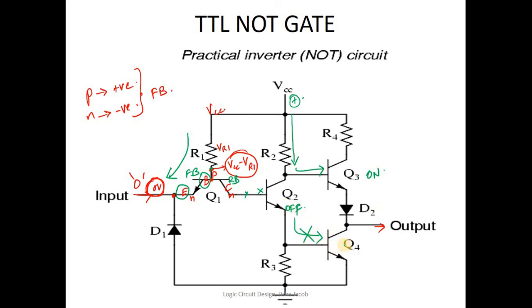Meanwhile, there is no current flowing into the base of Q4 because no current is allowed to flow through Q2. Therefore, Q4 is also off. If Q3 is on and Q4 is off, there is a path like this, which means current flows from VCC to the output, pulling up the output to VCC. That means logic 1.